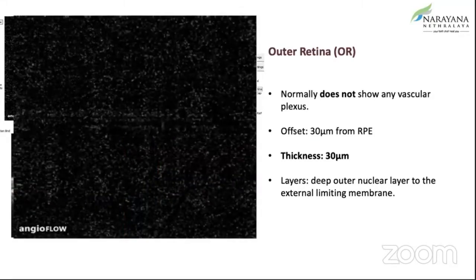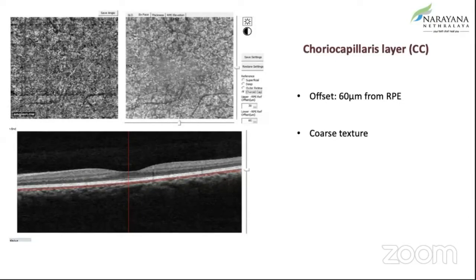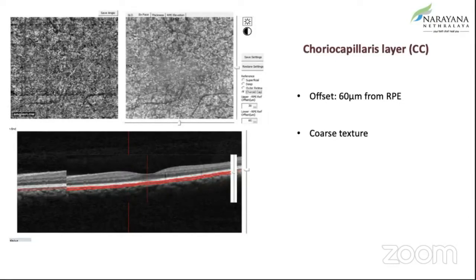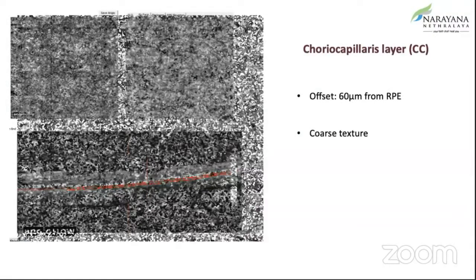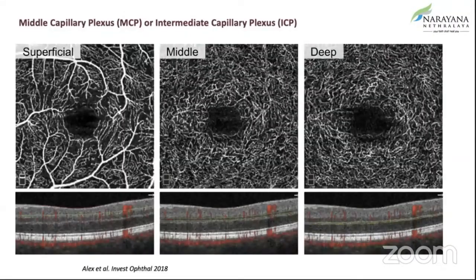In the outer retina, no vascular plexus is visible. And then finally you have the choriocapillaris layer, which powers the choriocapillaris and is about 60 microns from the RPE, and it has a very coarse texture. After these initial layers were described, they came up with another layer called the middle capillary plexus or the intermediate capillary plexus, which lies between the superficial and the deep — you can see it kind of has the features of both.